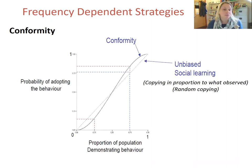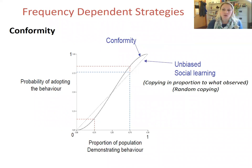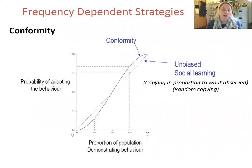This can be understood by looking at this figure, where the y-axis indicates the probability of adopting a behaviour and the x-axis the proportion of the population demonstrating that behaviour. If individuals copy or adopt a behaviour in proportion to what they observe, you would see a pattern as indicated by the dashed line here. This copying in proportion can be achieved by simply randomly choosing an individual to copy, which is why it is known as unbiased social learning.